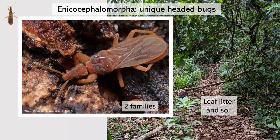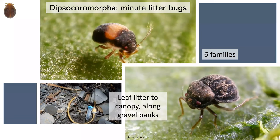So we have Aenochocephalomorpha, the already unique-headed bugs, which are found in the leaf litter and soil. There are only two families of Aenochocephalomorphins. We have Dipsocoromorpha, or the minute litter bugs, with six families that are found from the leaf litter to the canopy and along gravel banks.